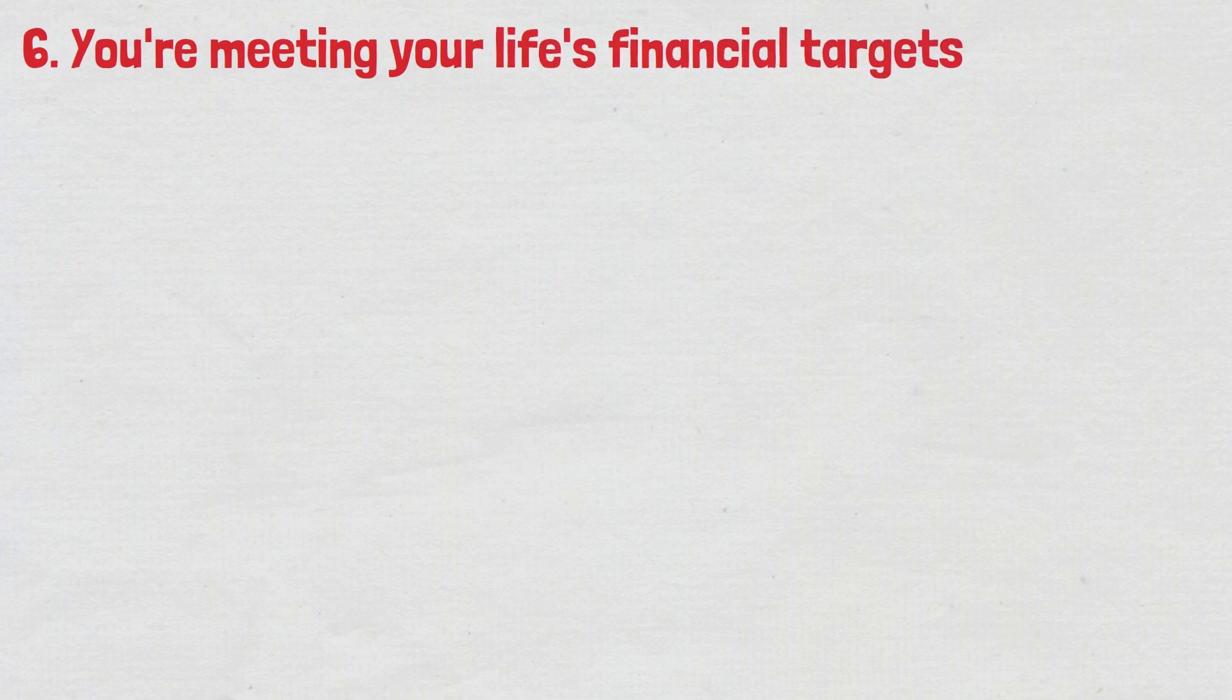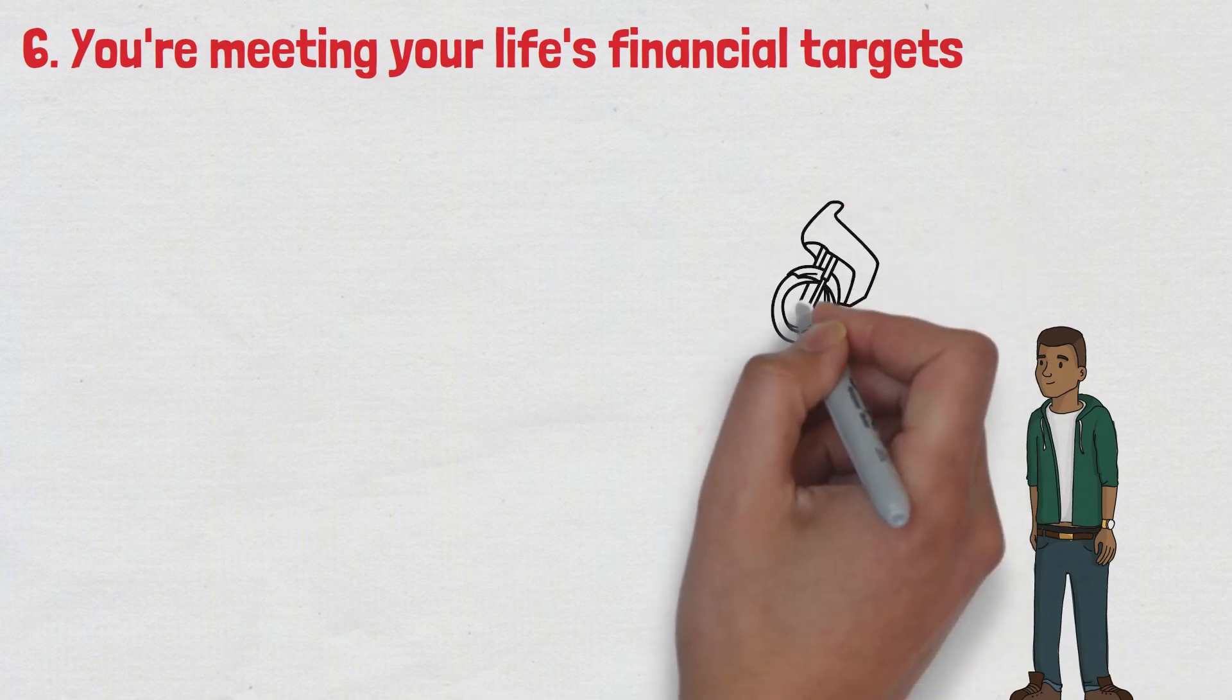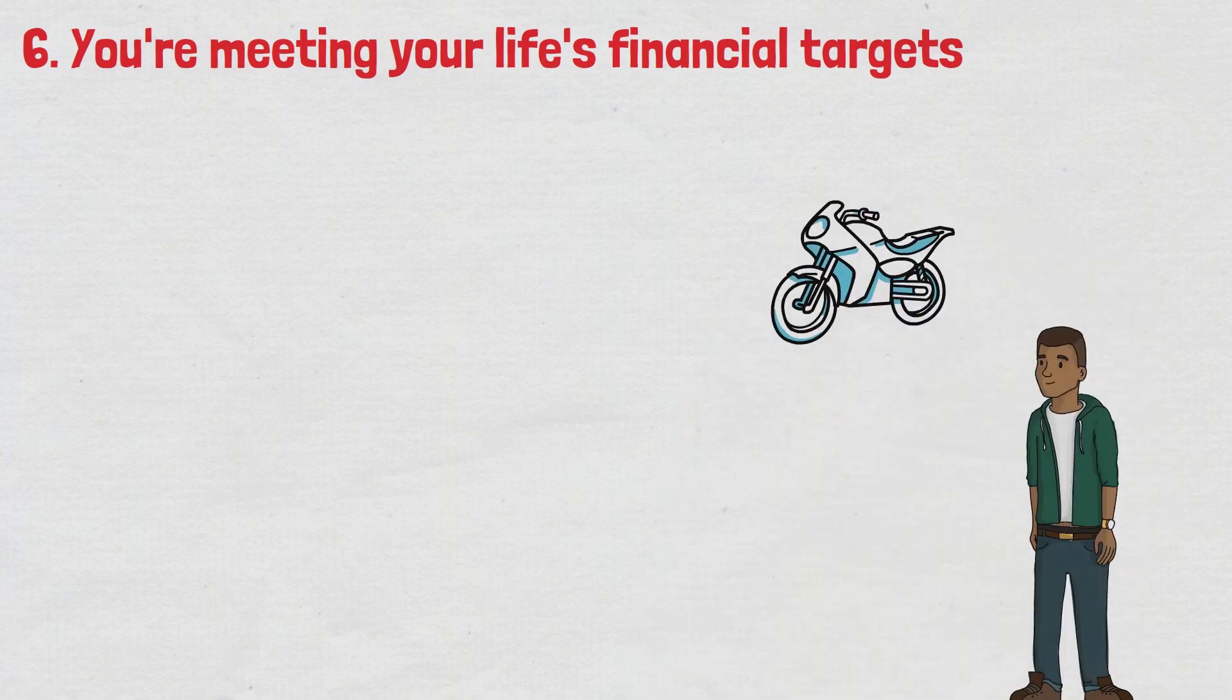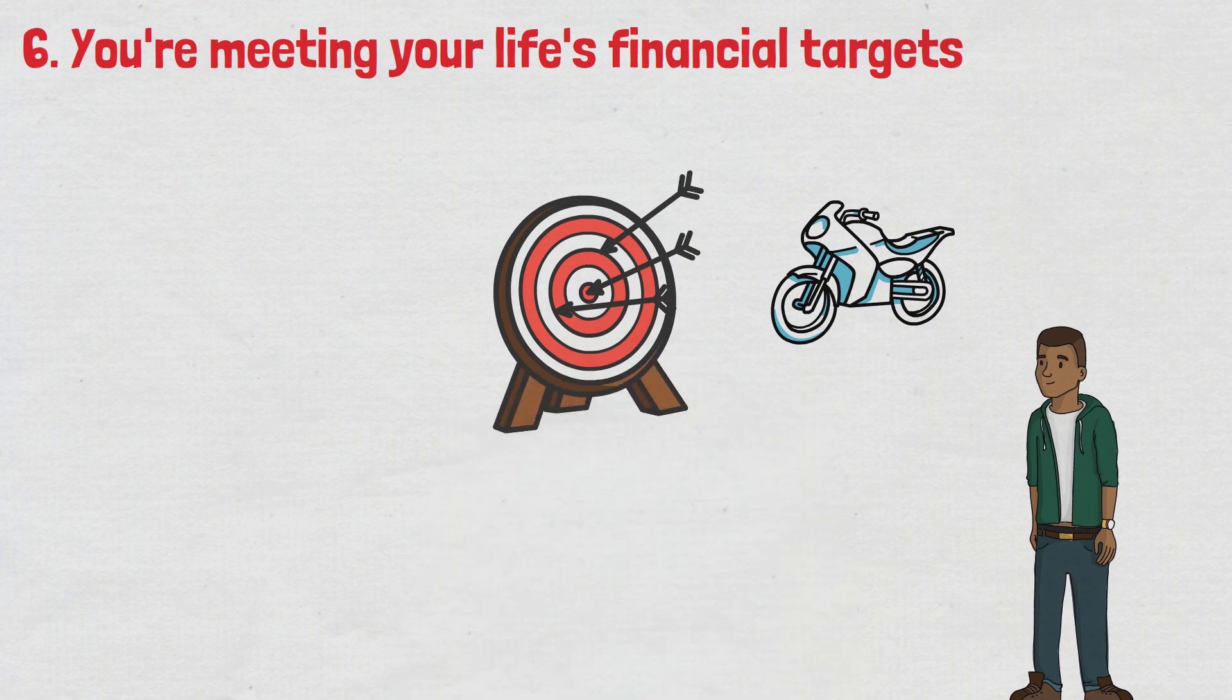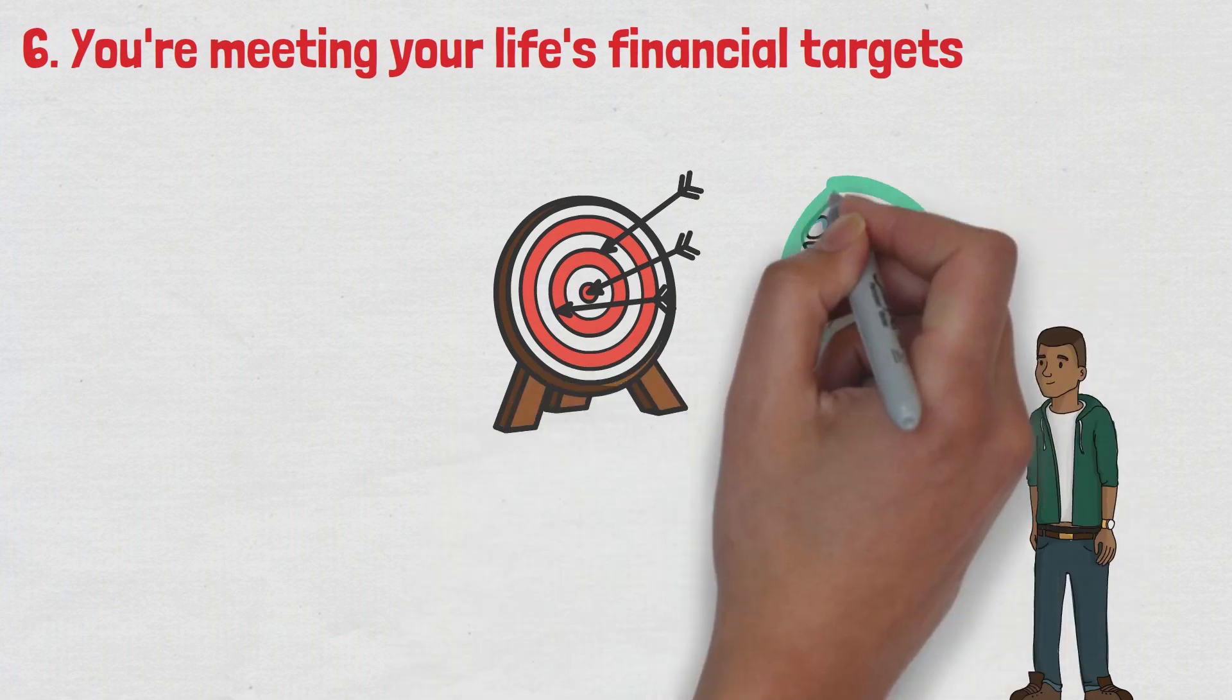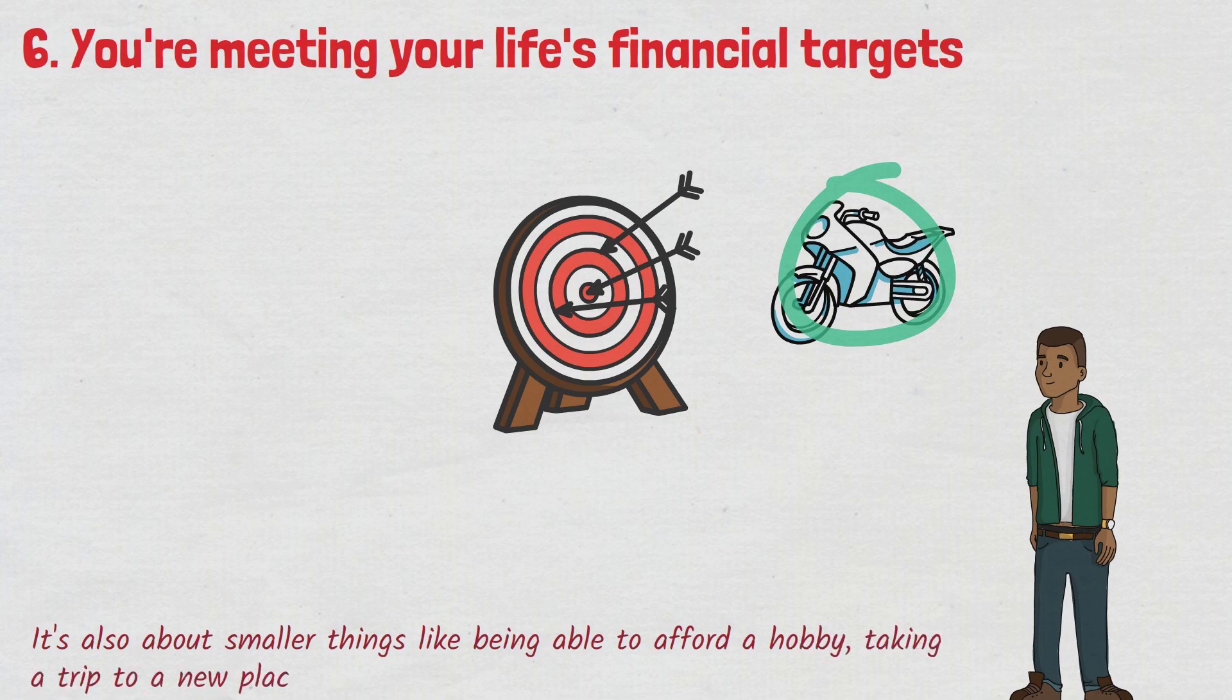Number six, you're meeting your life's financial targets. Remember when you were a kid and had a list of things you wanted to do when you grew up? Maybe you wanted to buy a bike, get a cool job, or go on a vacation to Disneyland. Well, reaching those life goals is a significant sign that you're doing well financially. It's not just about the big goals like buying a house or a car. It's also about smaller things like being able to afford a hobby, taking a trip to a new place, or even buying that new phone you've been eyeing.